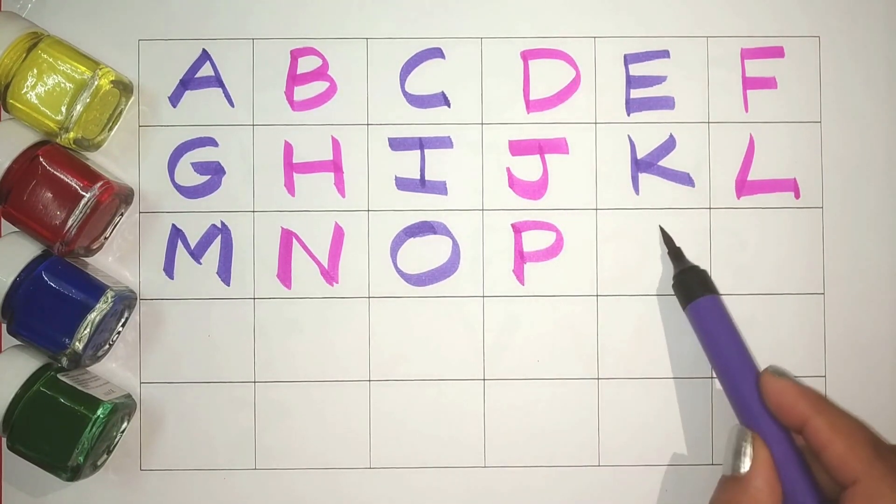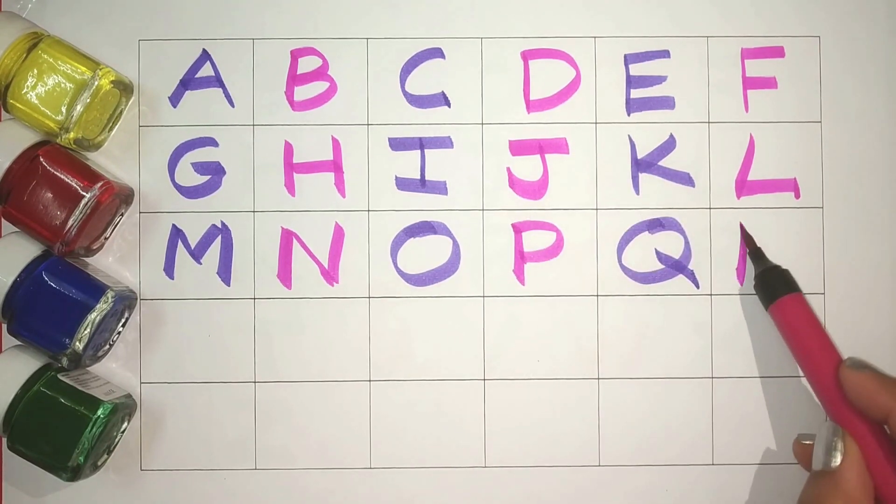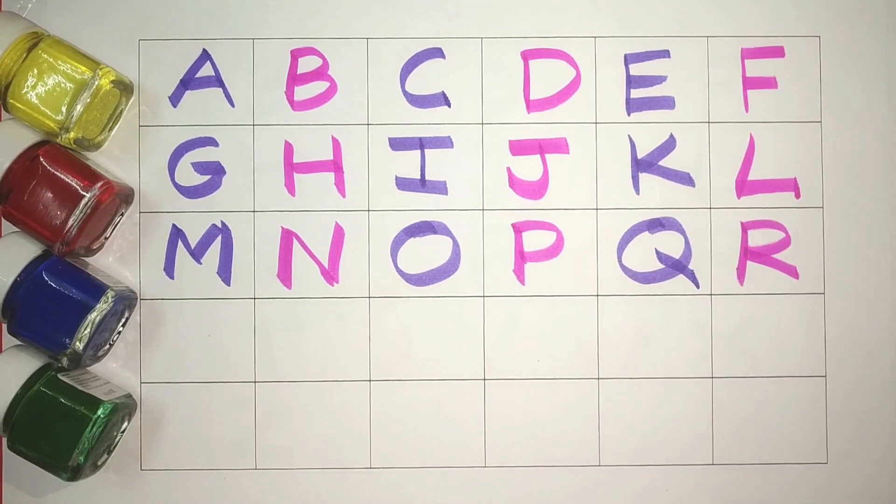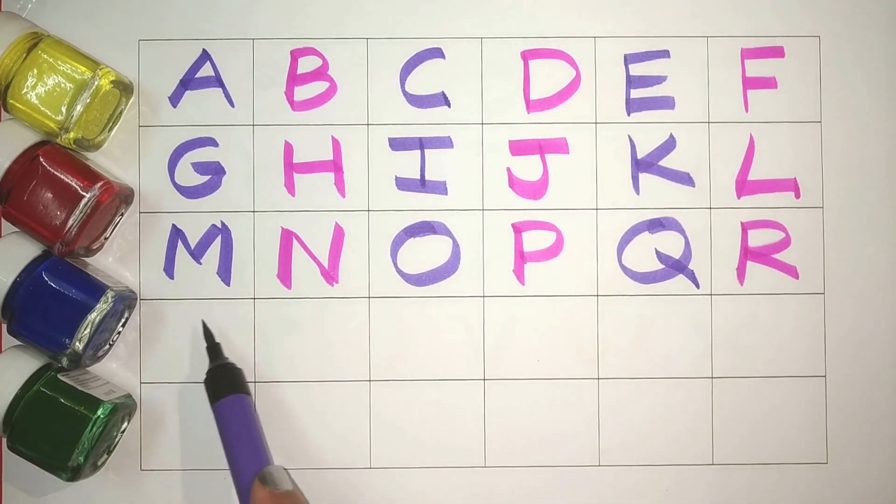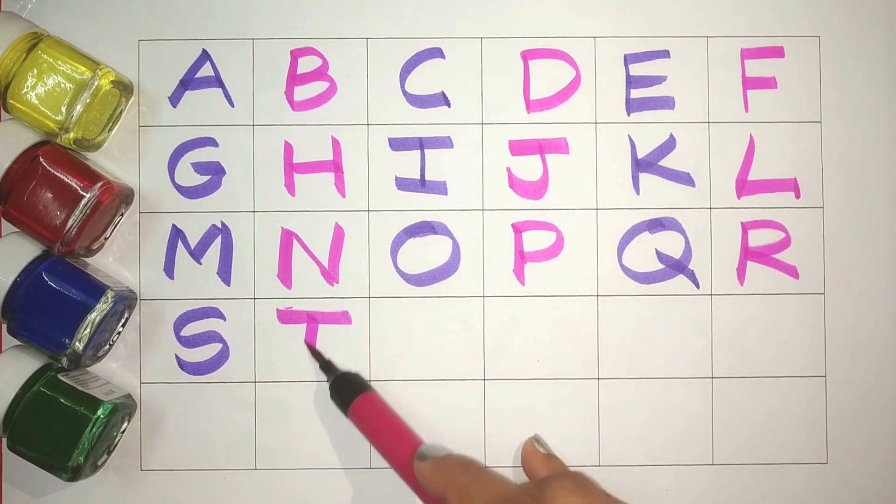Purple Q. Q for queen. Pink R. R for rat. Purple S. S for snake. Pink T. T for table.